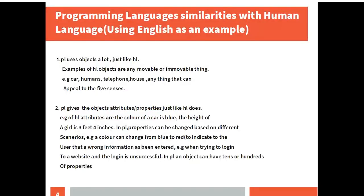In this paper I will be talking about seven similarities — there are several similarities, but seven we will look into. The first similarity is that PL uses objects a lot, just like HL. Examples of HL objects are any movable or immovable thing, e.g.,